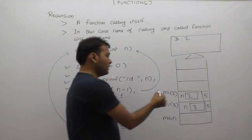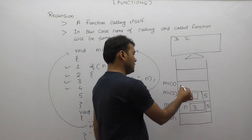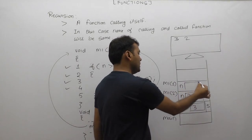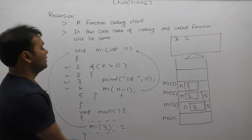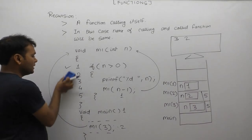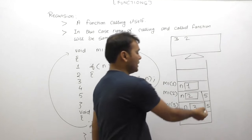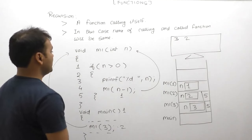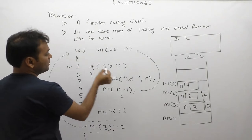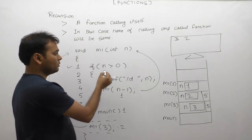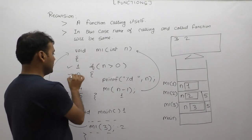We process: n greater than 0, n value is 2, condition is true. Third statement: print tab displays n, which is 2. Then the fourth statement calls m1 with n minus 1, which is 1. Control passes to m1 with argument 1. The previous m1 instance has the 5th statement pending. Again m1 is called with argument value 1. Memory is allocated for n with value 1. Again, all 5 statements need to be processed, and the previous instance has pending operation 5.